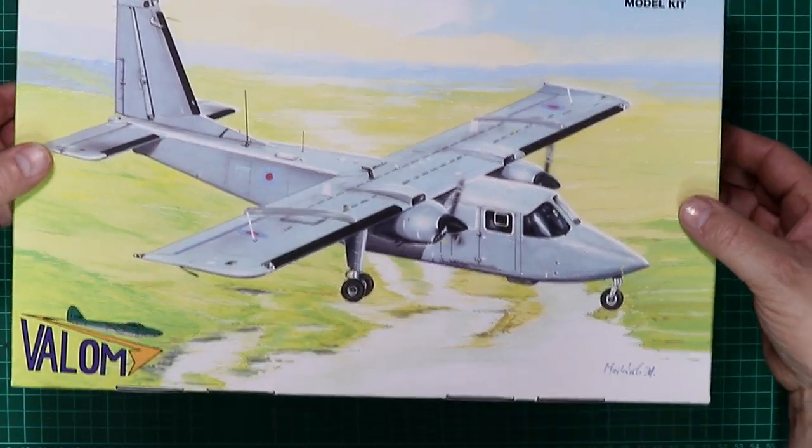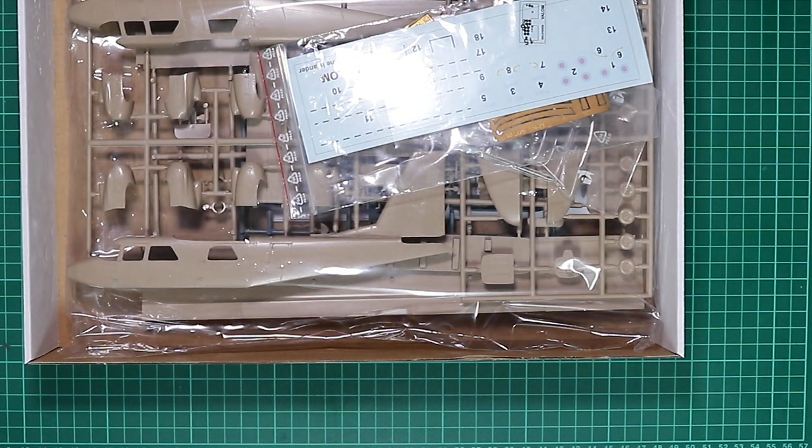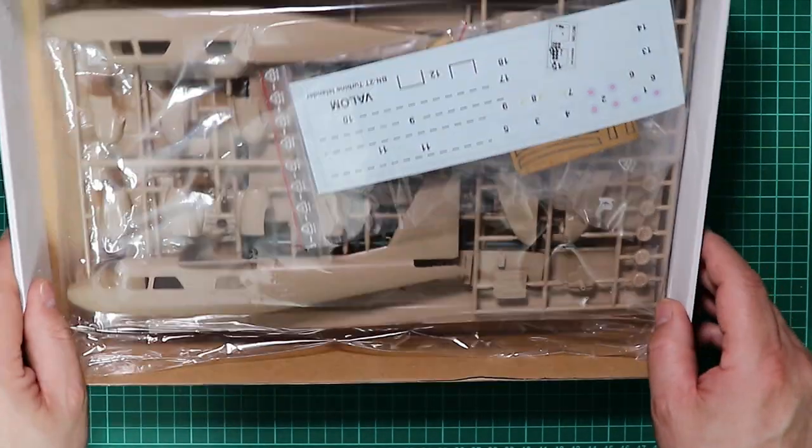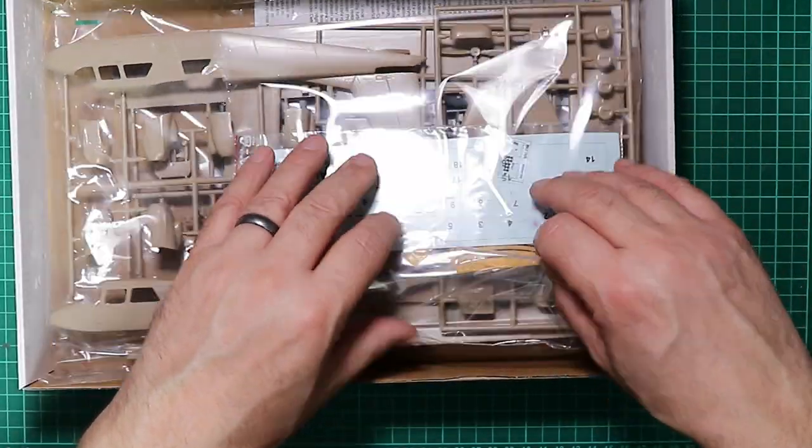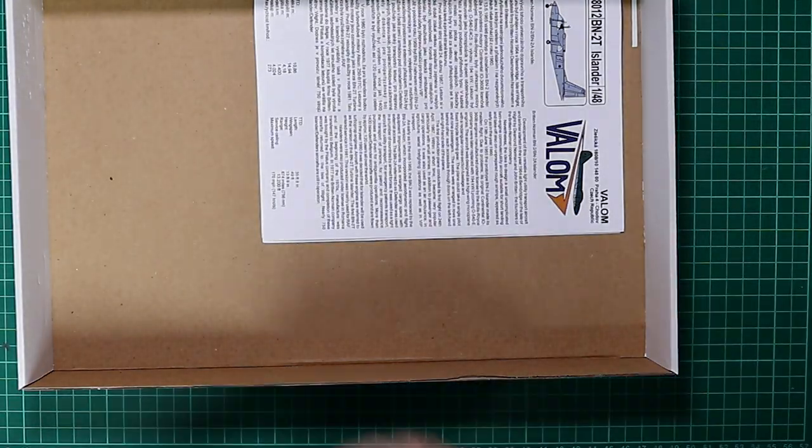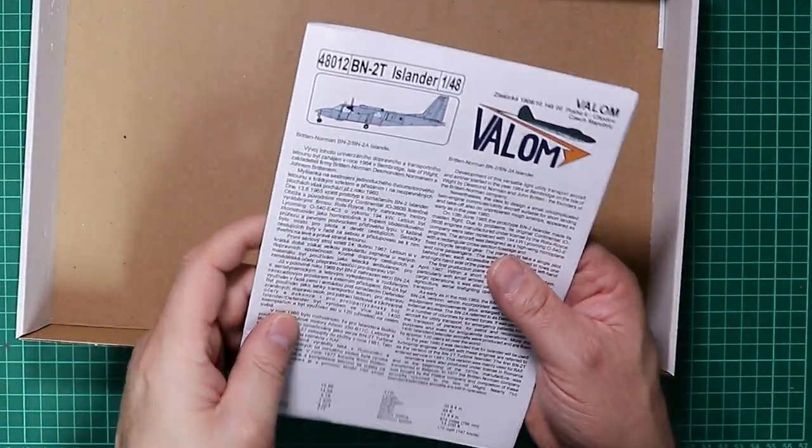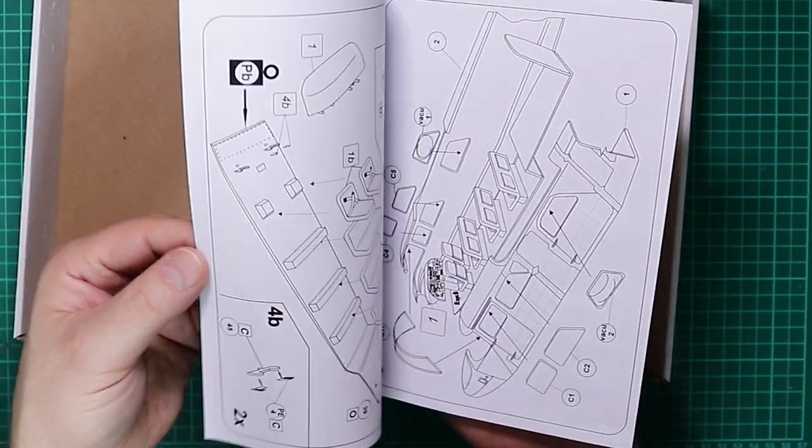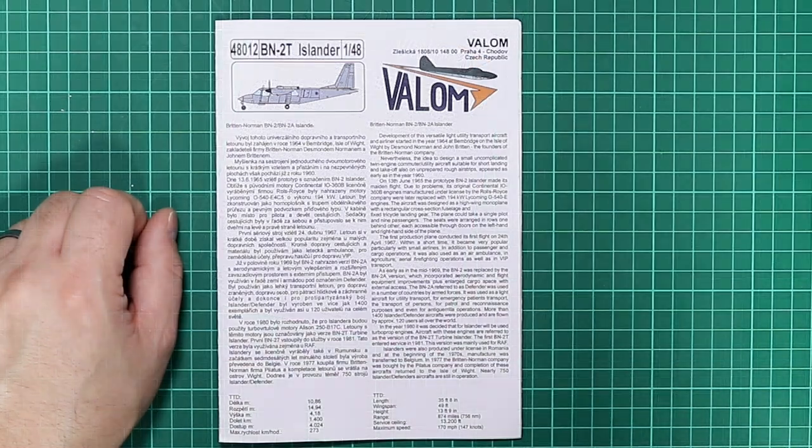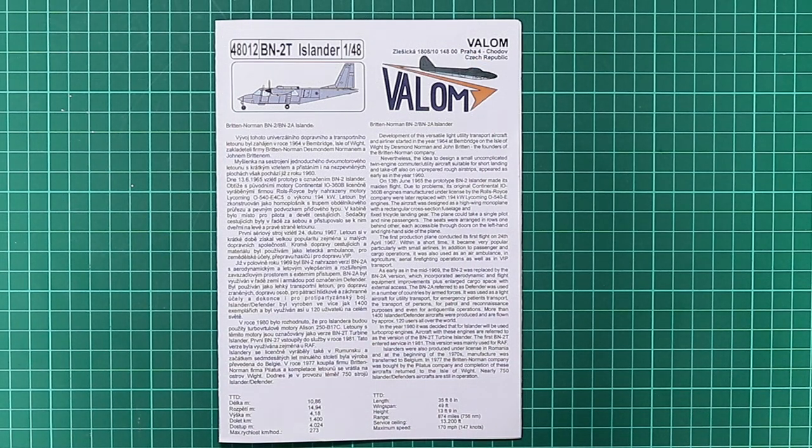I've never had a Valom kit before, but it's a subject that I quite like. As we can see, we've got a single bag, more on that later. We've got an instruction booklet. Looking at the instruction books, it looks to be well printed. We've got a brief synopsis of the type in multilingual format and some operational data there, such as maximum speed.